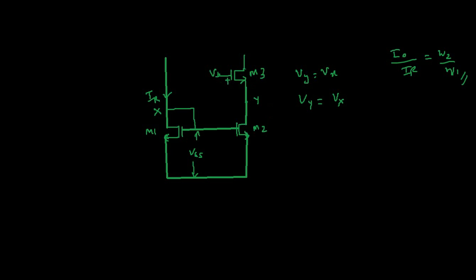M3 is connected with this gate-to-source path. Applying KVL: VY + VGS3 = VB, so VB = VY + VGS3. Since we want VY = VX, we can write VB = VX + VGS3. So if we add VGS3 to VX, we obtain the required value of VB, and by providing that voltage to the gate of M3 we can ensure VY = VX.